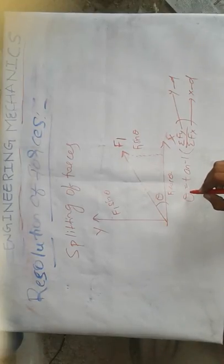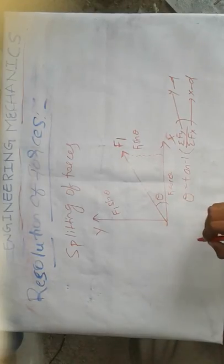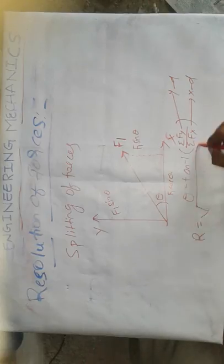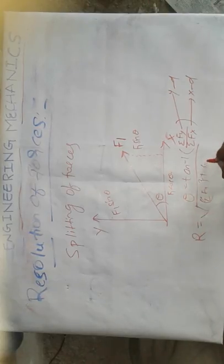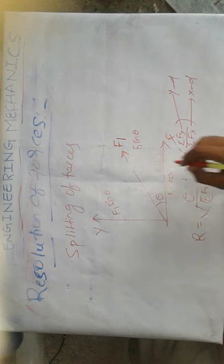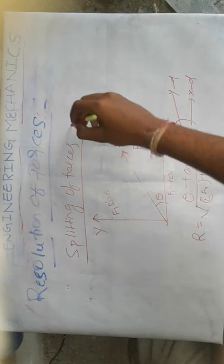To find the resultant component, we can say sum of the forces: Fy square plus Fx square. This is nothing but the resultant force.